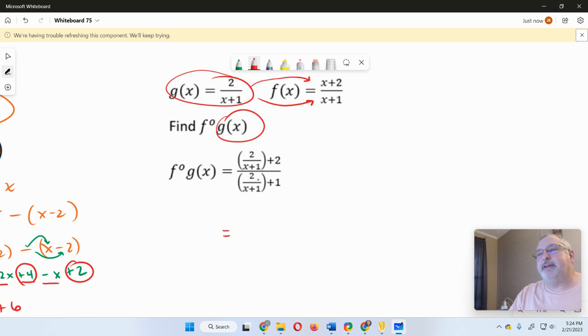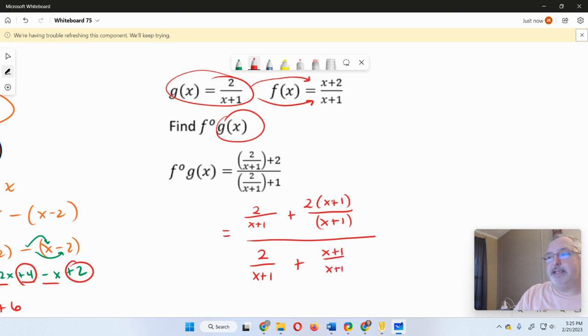That's going to look like this. And now it's a matter of simplifying. The simplifying here is the hard part because we have to get common denominators and then simplify the fractions. So both of these, since we have x plus 1s, that's going to be our LCD. And so we'll have on the top, we'll have 2 over x plus 1 plus 2 times x plus 1 over x plus 1. In the denominator, we've got 2 over x plus 1 plus x plus 1 over x plus 1.